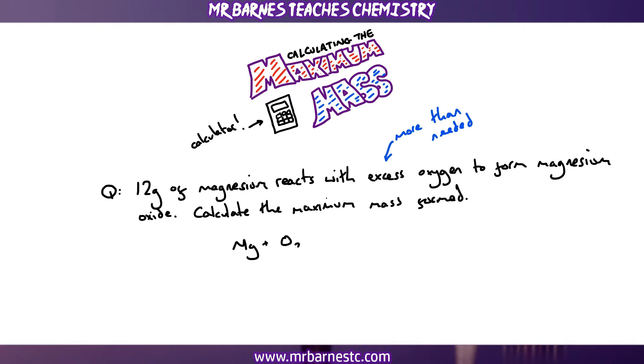It also gives you the balanced equation of 2Mg plus O2 goes to 2MgO. And it gives you the atomic masses of magnesium which is 24 and oxygen which is 16. And it tells you it's worth 3 marks. So what you need to be able to do is take that information and work out the maximum mass of magnesium oxide produced.